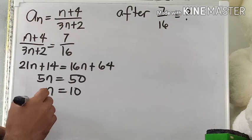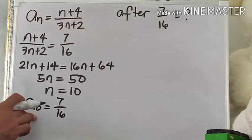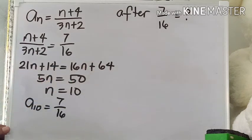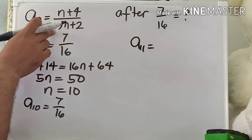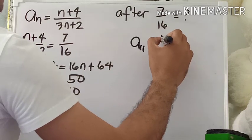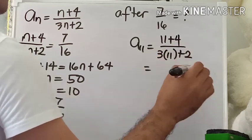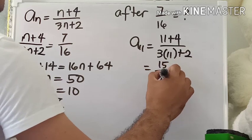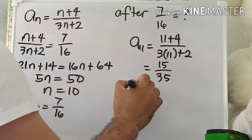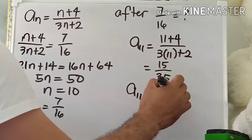Therefore, 7 over 16 is the 10th term of this sequence, meaning a sub 10 = 7/16. The term after 7/16 is the 11th term. To find it, substitute n = 11 into the defined sequence: (11 + 4) over (3 × 11 + 2) = 15 over 35. This fraction is not yet in lowest terms, so the 11th term — the term after 7/16 — is 5 over 7.